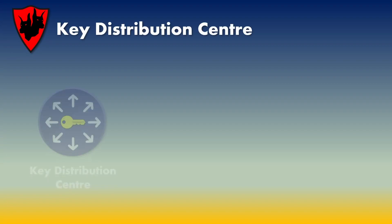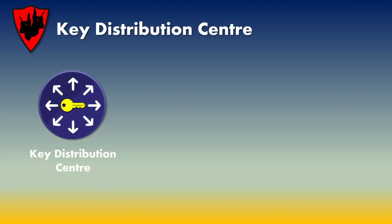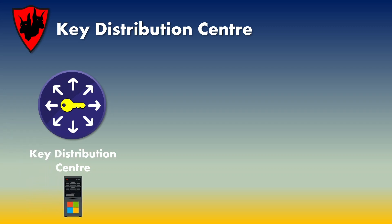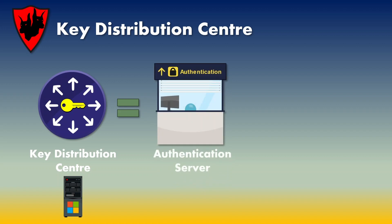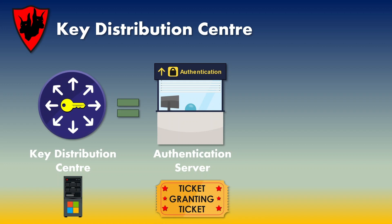Let's look at a high level view of the key distribution center or KDC. The KDC is basically made up of two server services: the authentication server and the ticket granting server. In a Windows environment, you should think of them more like services than servers as a single domain controller can act as a KDC. Simply put, the authentication server's job is to authenticate a user in a domain and if all the user's details provided are correct, then the user gets a ticket called a ticket granting ticket.